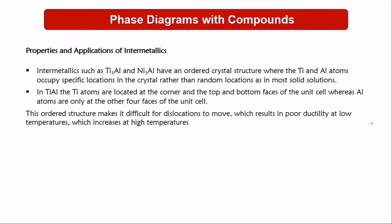We are still on the phase diagram with compounds, and there are some properties of intermetallic compounds to know. Intermetallic compounds such as titanium aluminide and nickel aluminide have an ordered crystal structure, where Ti and Al atoms occupy specific locations in the crystal rather than random locations as in modes of solid solution. You can read these properties and applications.